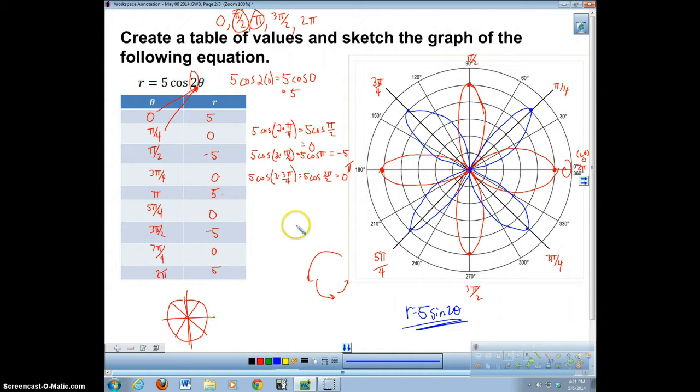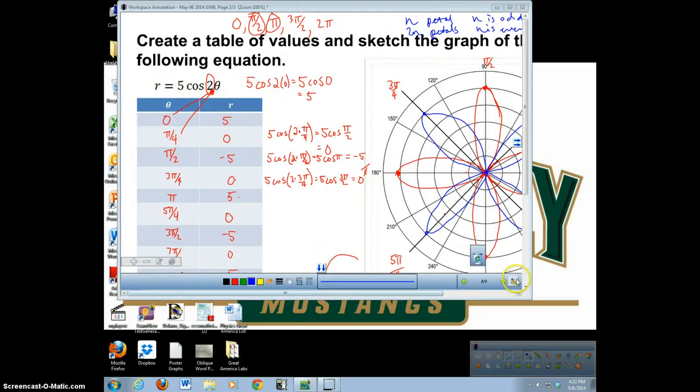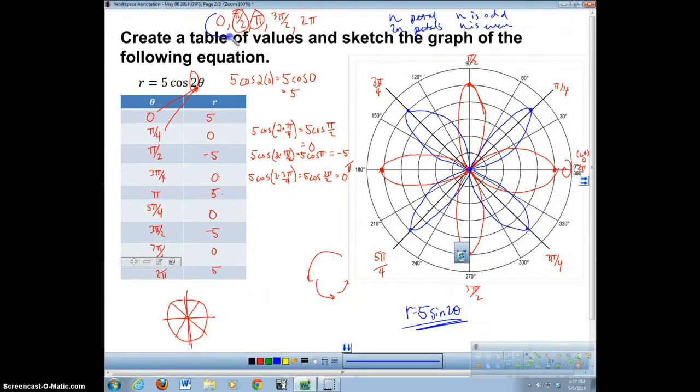That's graphing a rose. A couple things I want you to remember when you come into class tomorrow: a rose has n petals if n is odd, and 2n petals if n is even. That's important to know. And then remember that you want to take these guys right here and divide by this number. If this was a 3, I would have divided by 3. If this was an 8, I would have divided these by 8. But luckily it just gives us back to those starting points.